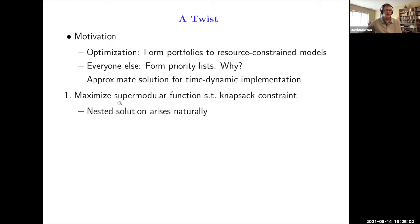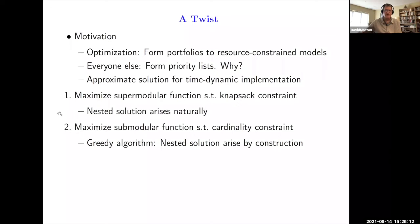I'm going to talk about a couple different ways that this arises in a natural sense. If you happen to be maximizing a supermodular function subject to a knapsack constraint, then nested solutions arise in a natural way. If you're maximizing a submodular function subject to a cardinality constraint, then we can run a greedy algorithm and get a near-optimal solution just by construction. I'm going to illustrate these ideas with a couple or three examples.